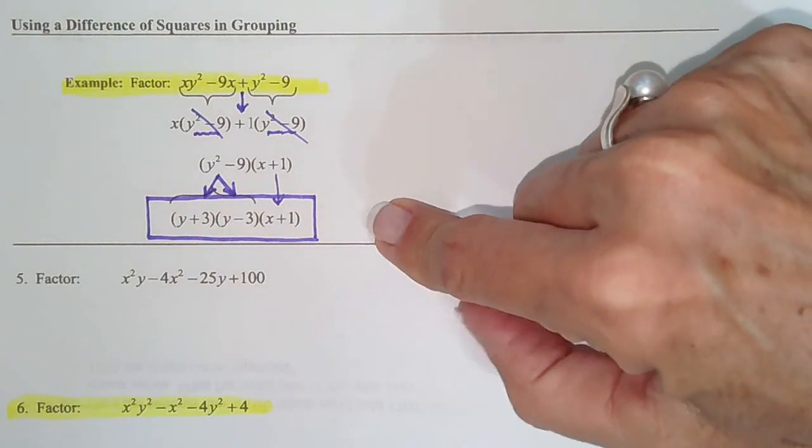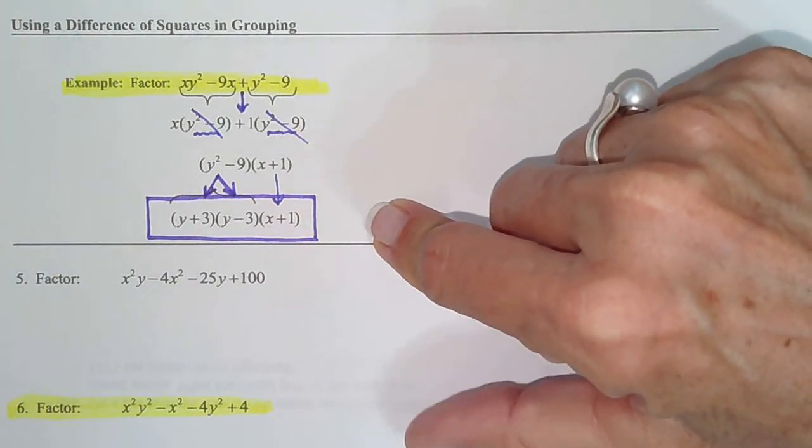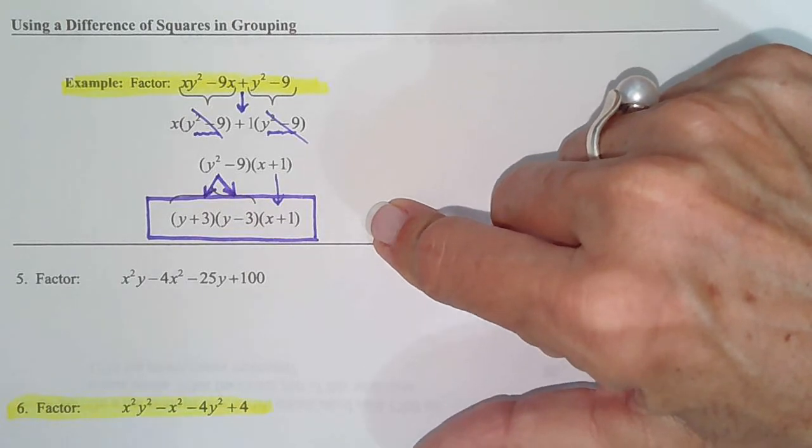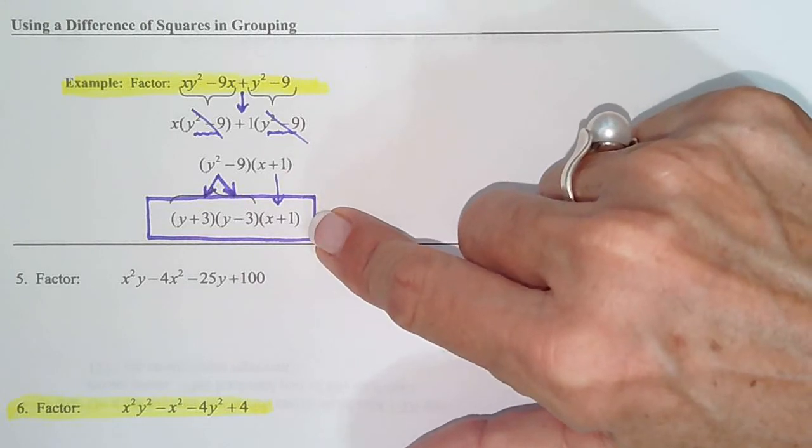So that is one of the 8 on the test that factor twice. Several of them have GCFs first and then factoring. This one has grouping and then difference of squares.